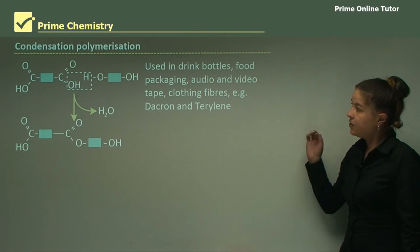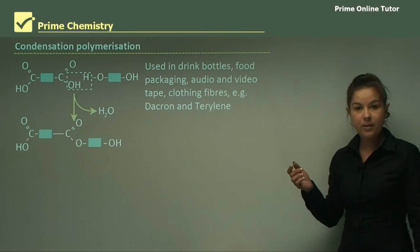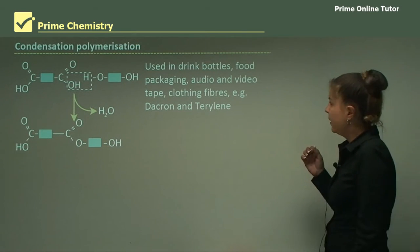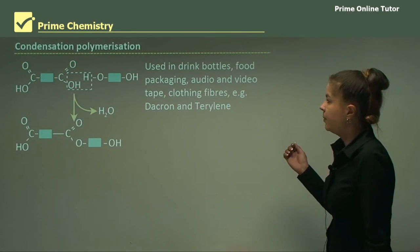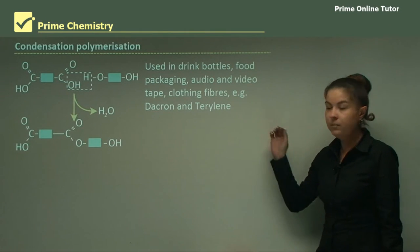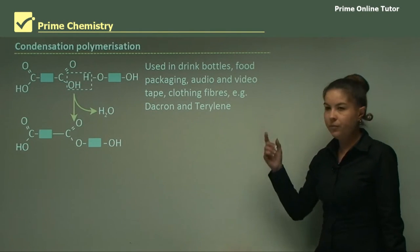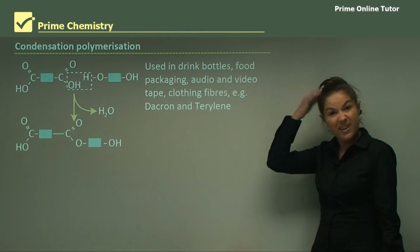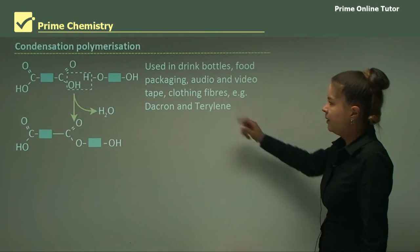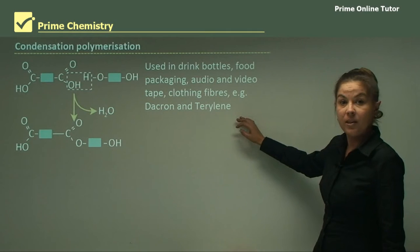PET is used in drink bottles, food packaging such as when you get your meat, audio and videotape, and clothing fibers. For example, Dacron and Terralene. If you've ever heard of terry-toweling for Australian hats and towels and stuff like that, that's a type of condensation polymer, terralene.